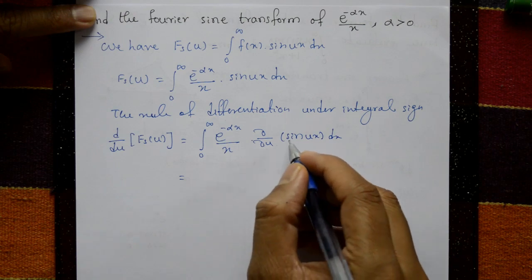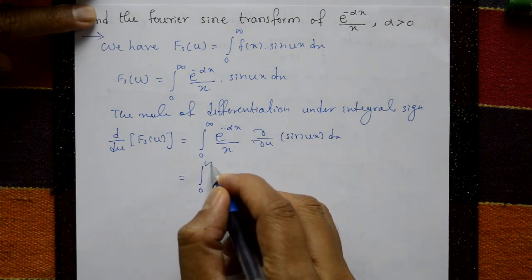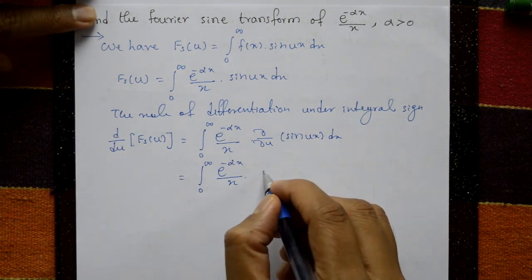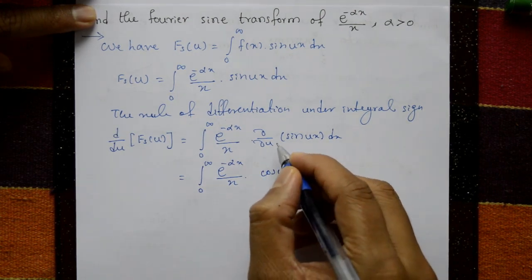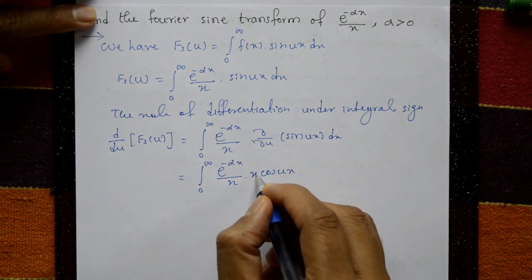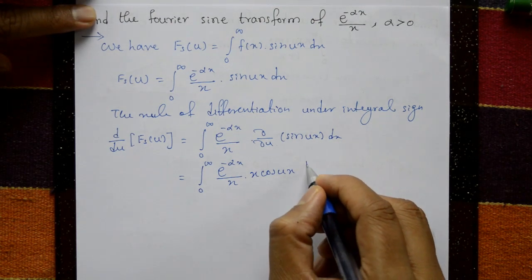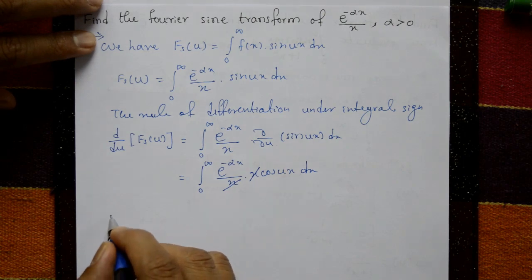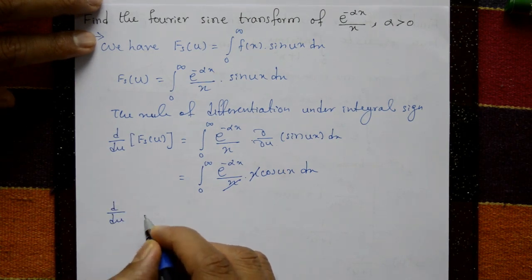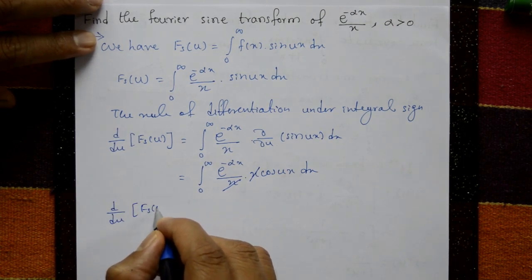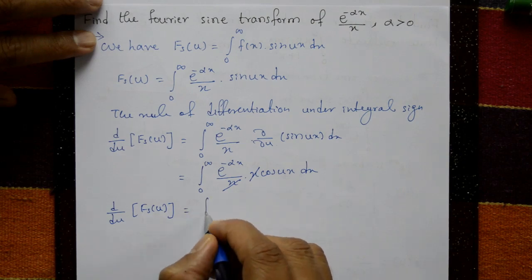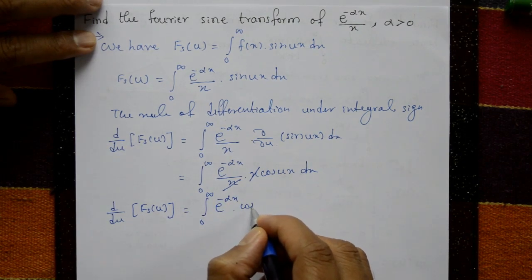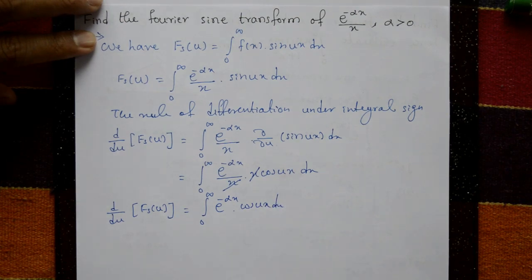After differentiating sin(ux) with respect to u, we get cos(ux). So d/du of Fs(u) equals the integration from 0 to infinity of e raised to minus alpha x into cos(ux) with respect to x.